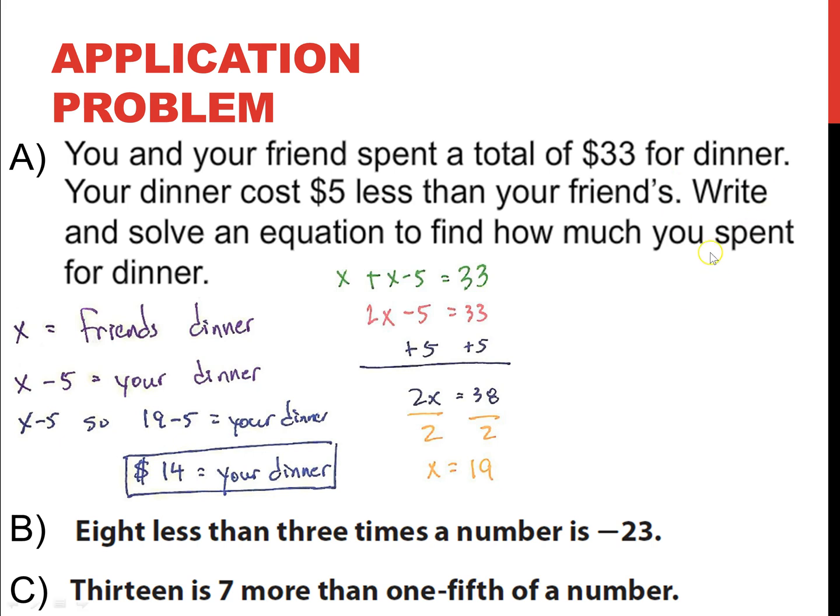So, leaving this here to give you a hint to figure out how math vocabulary is impacting our decisions, I'm going to read examples B and C, and then you can pause the video and do them on your own. So, example B is 8 less than 3 times a number is negative 23. A lot of people are going to say 8 minus, and I'm going to give you a hint, that is not how you write that equation. So, for example C, it is 13 is 7 more than 1 fifth of a number. So, go ahead and solve these equations, turn them into an equation, and then solve them. Pause the video. No answers, just letting you do the work on your own. I'll be here when you get back.